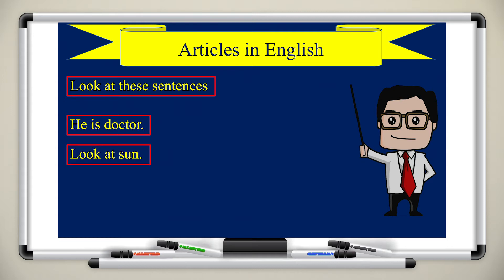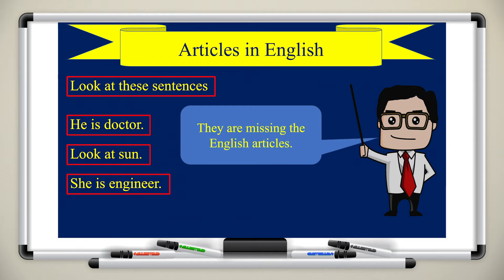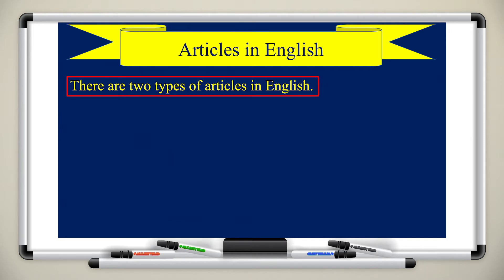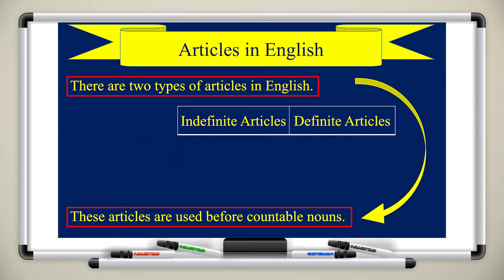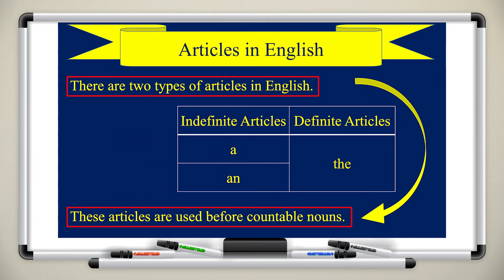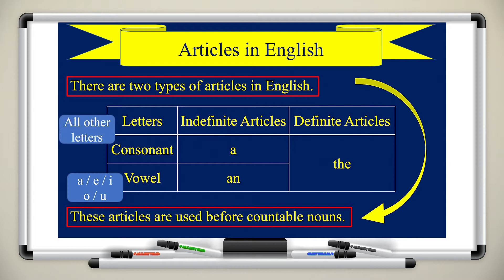First, articles in English. Look at these sentences: 'He is doctor,' 'Look at son,' 'She is engineer.' All these sentences are missing English articles. There are two types of articles: indefinite articles and definite articles. For indefinite articles we use 'a' and 'an,' and for definite articles we use 'the.' We use 'a' when the word begins with a consonant letter, and 'an' when the word begins with a vowel. The vowels are a, e, i, o, and u.